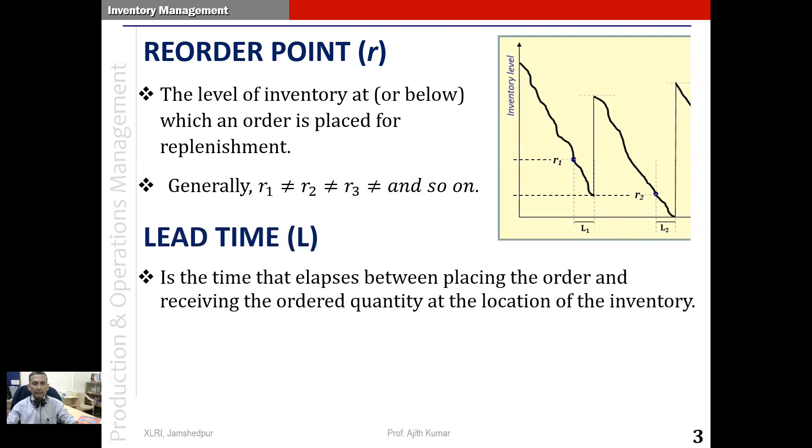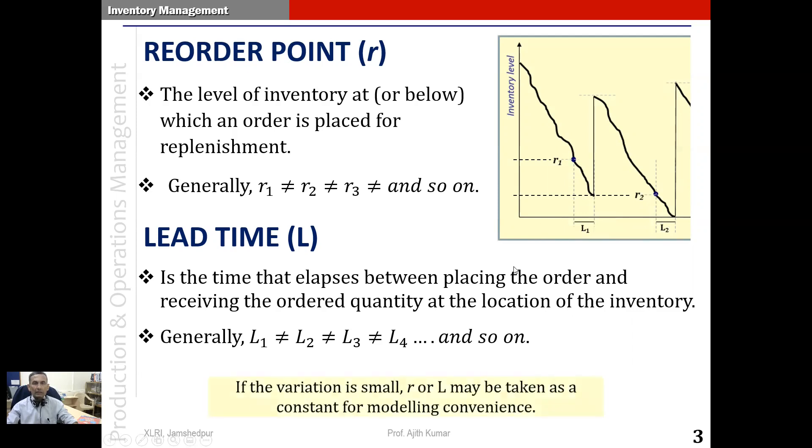The second term is lead time and lead time is defined as the time that elapses between placing the order and receiving the ordered quantity at the location of the inventory. Generally speaking, the lead times across different cycles need not be equal. If the variation is small in the R values and the L values, then we may take them to be a constant for the convenience of mathematical modeling.